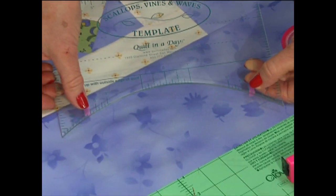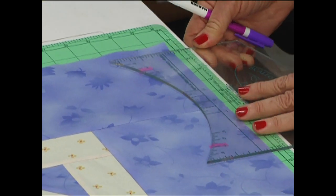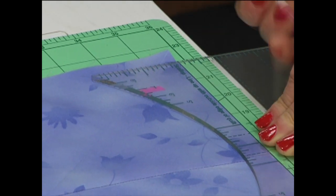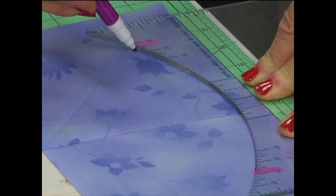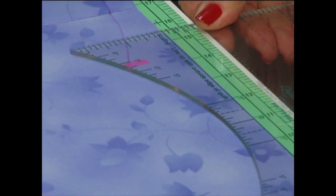Turn the ruler right side up and place that mark right on the diagonal line. Line up the straight line with the bottom of the border and then just mark and move.